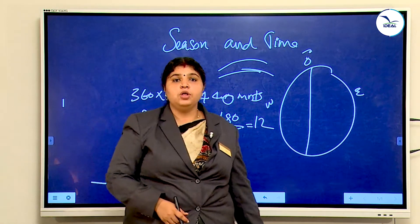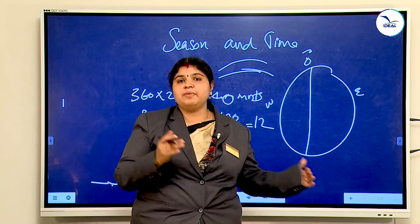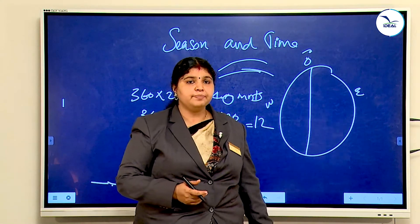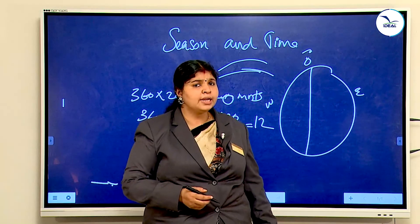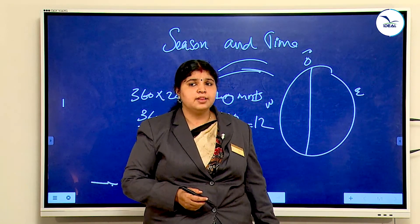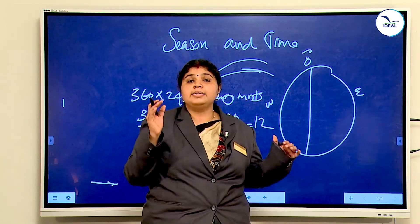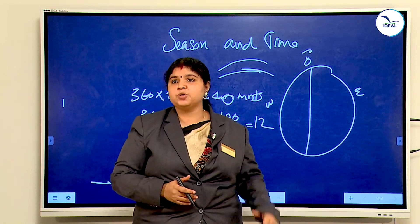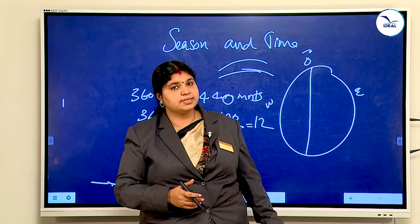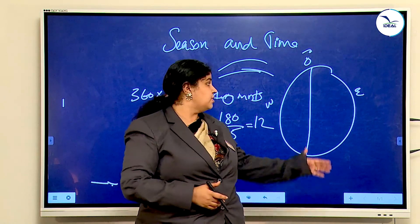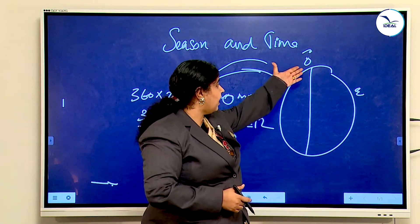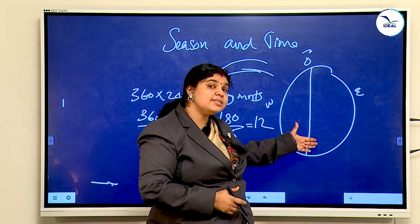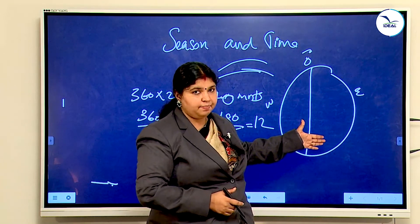Next, we want to learn about local time and standard time. Local time means the time based on the apex position of the sun — that is, the exact time of a particular longitude. That is the local time.